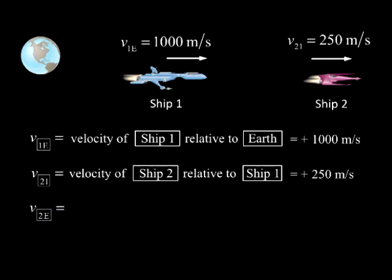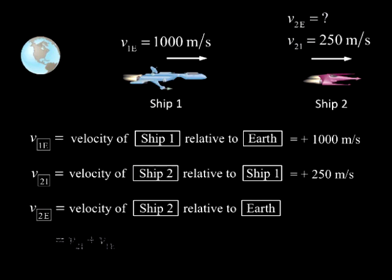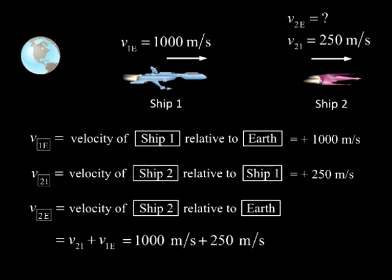V2e is the speed of ship 2 relative to Earth, and is given by V21 plus V1e equals 1,000 meters per second, plus 250 meters per second, which equals 1,250 meters per second.